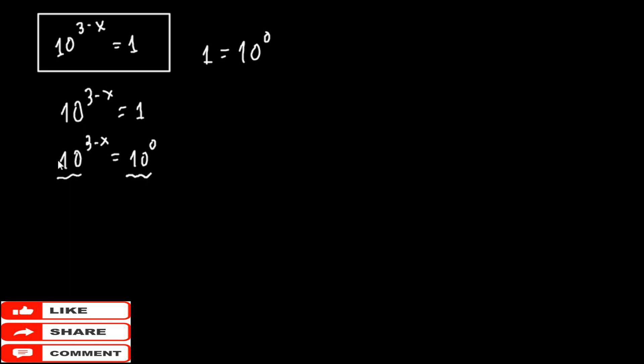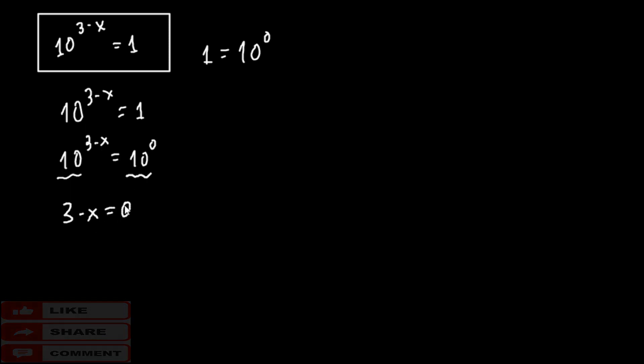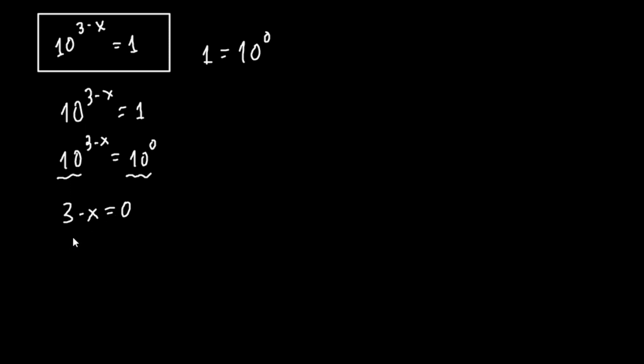We have an equation on the same basis, so we have 3 minus x equals 0. Or, we have minus x equals minus 3. Multiply with minus 1, so finally we have that x equals 3. And this is our solution.